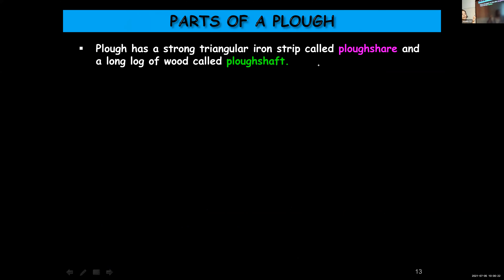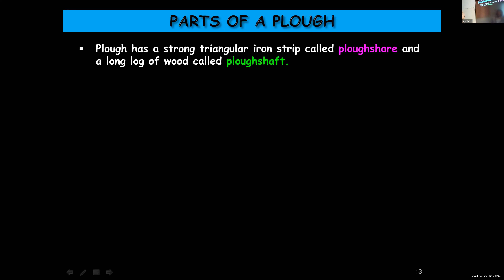Now we are going to learn about the different parts of a plow. There are two main parts: one is a long piece of wood which you call the plow shaft, and it has a strong triangular-shaped iron strip which you call the plow share. The two main parts of a plow are plow share and plow shaft. Plow share is the triangular iron strip at one end.